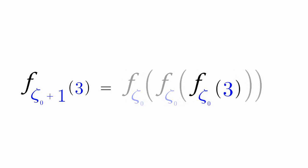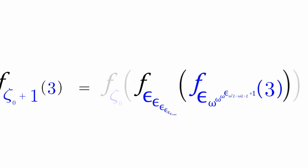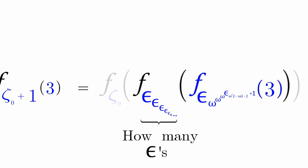f(ζ₀)(3), as we've known earlier, expands to this giant monstrosity. f(ζ₀) of this giant monstrosity is equal to f(ε_{ε_{ε_{…}}}), but with this many epsilons.